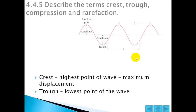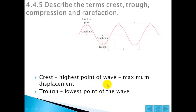Describe the terms crest, trough, compression, and rarefaction. The crest is the point of maximum amplitude which is above the equilibrium line, and the trough is below the equilibrium line. So the crest is at the highest point of the wave — the maximum displacement — and the trough is the lowest point of the wave.